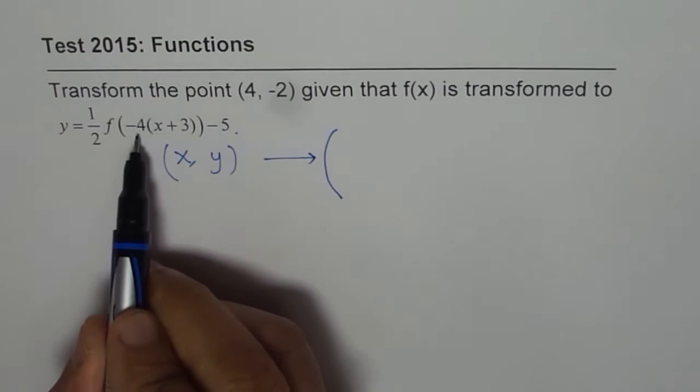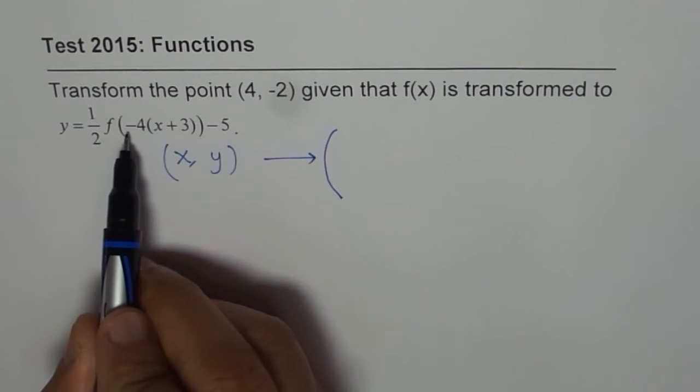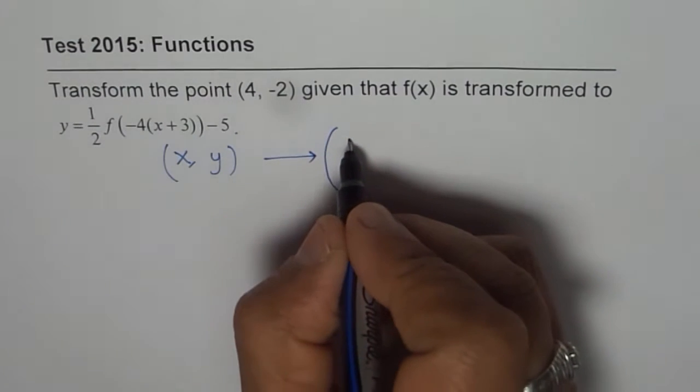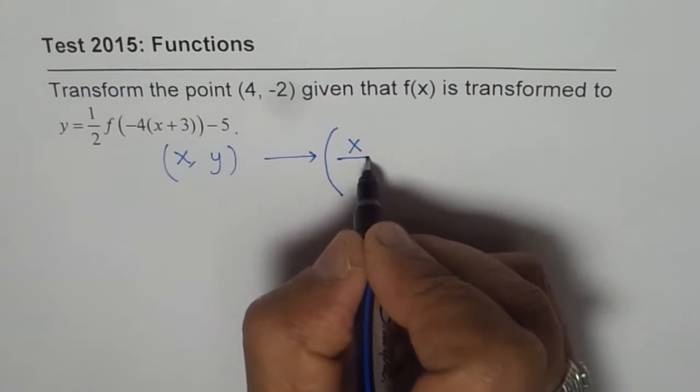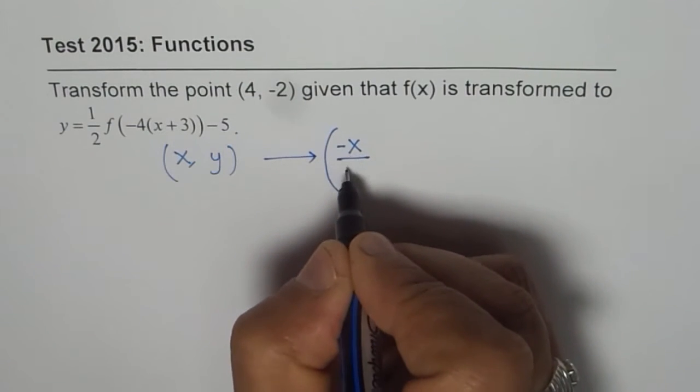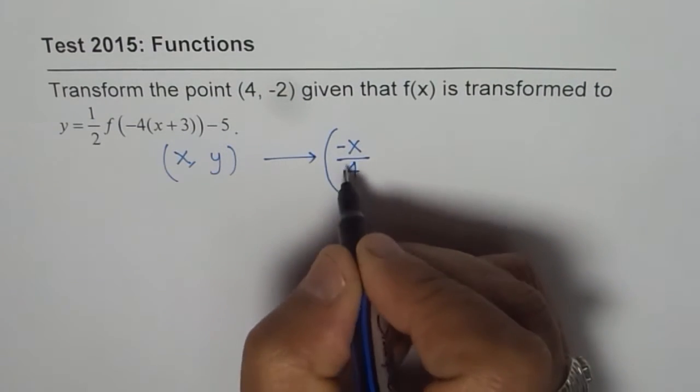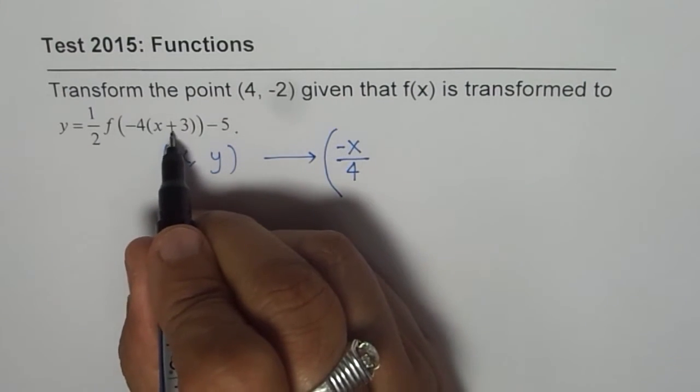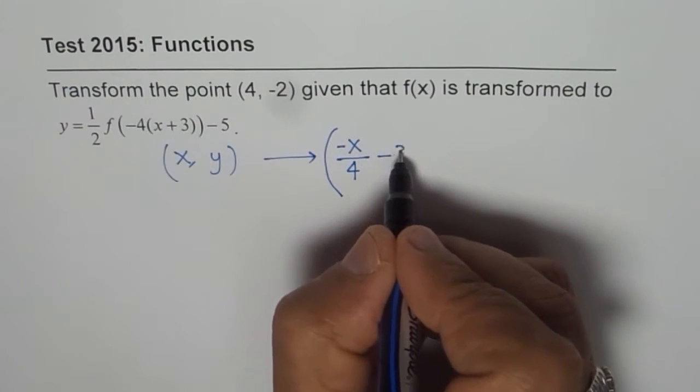As far as the x value is concerned, it should be divided by minus 4, so we can say x value is divided by minus 4. So divide by 4, take negative, that is a reflection on y. And then take away 3.